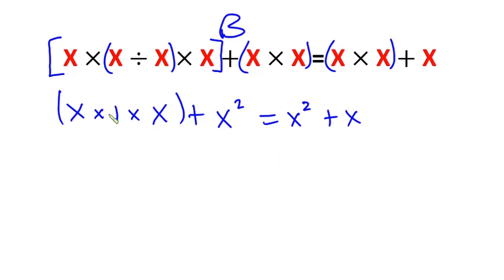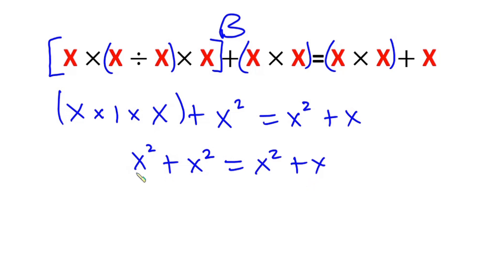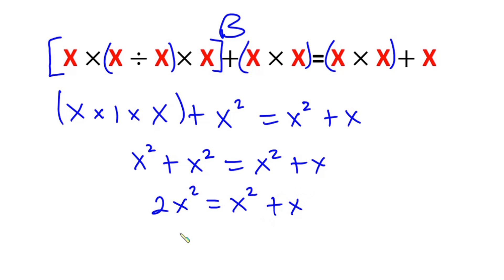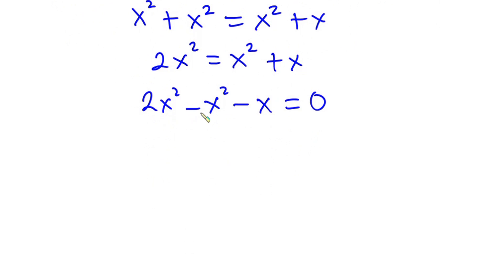So from here, x times 1 is still x, then times x is x squared, plus x squared equals x squared plus x. So we have x squared plus x squared, which is 2x squared, equals x squared plus x. Now equating everything to 0, we have 2x squared minus x squared minus x equals 0. Now 2x squared minus x squared is x squared, then minus x, equals 0.